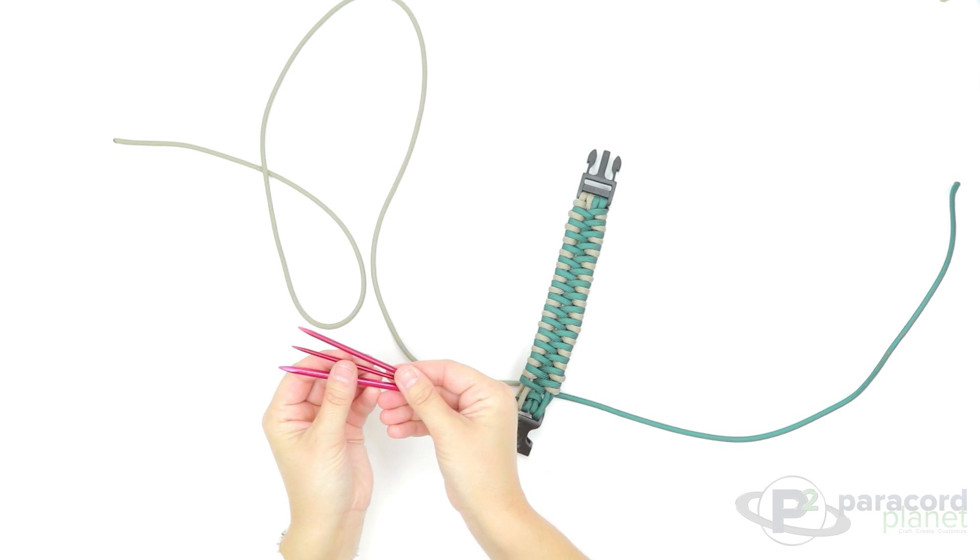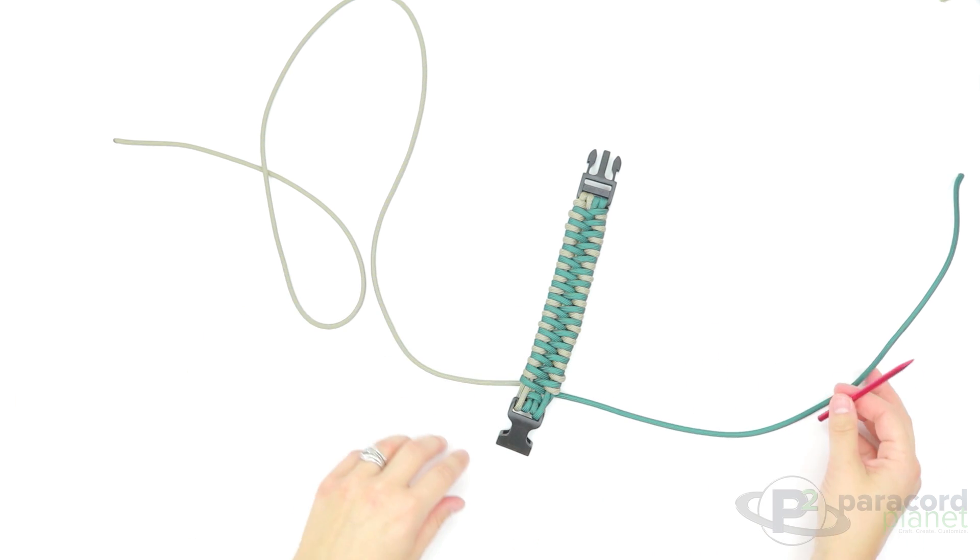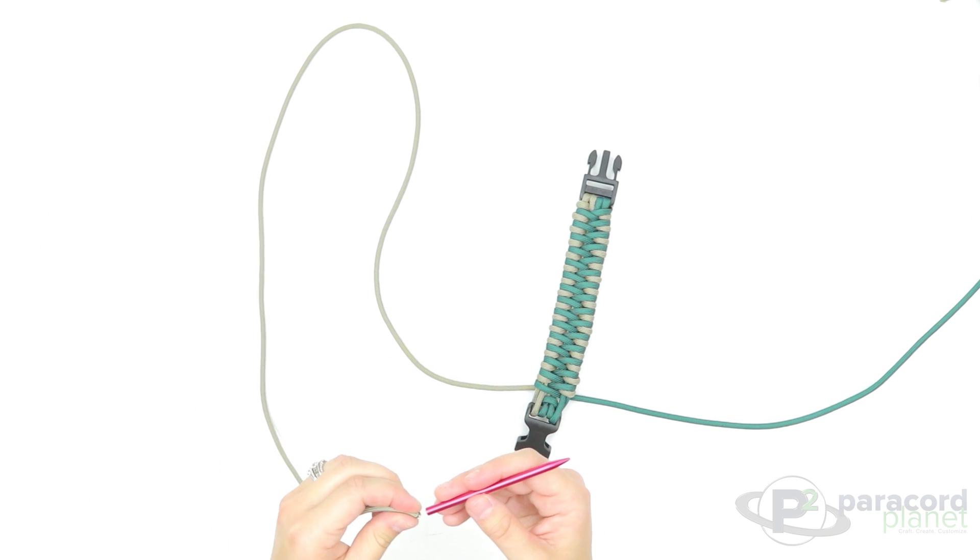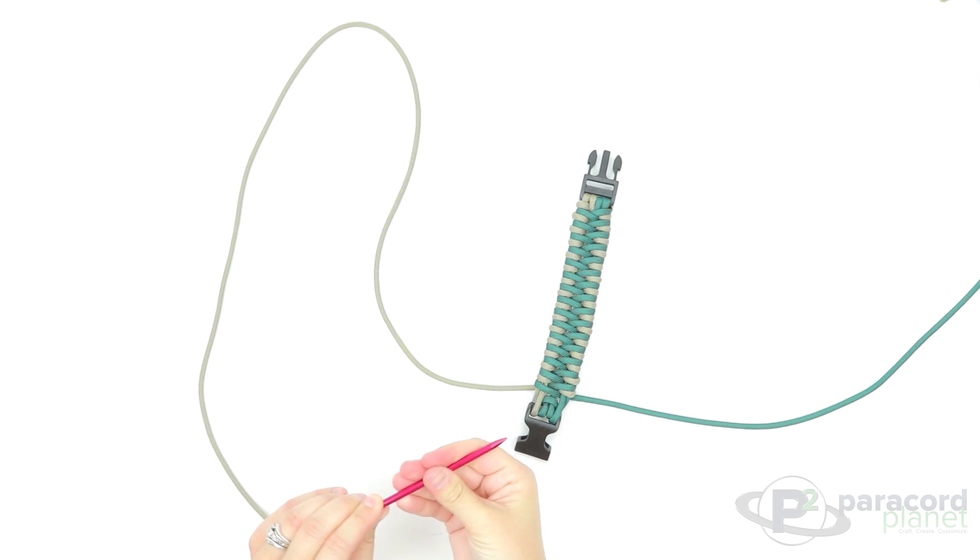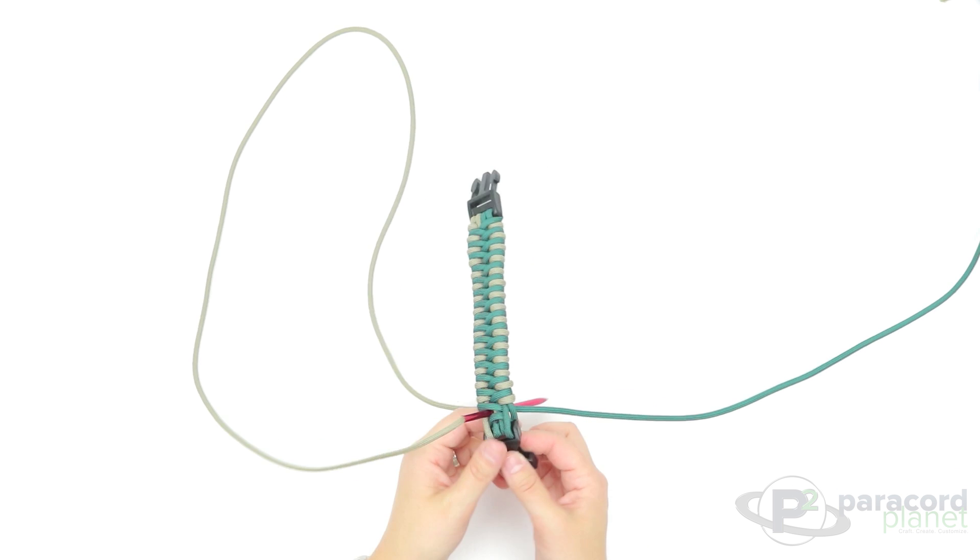I have the fids right inside of the knotter's tool here. Inside the knotter's tool you do get three different sizes, so I will of course use the one that is really good with the 550 cord.